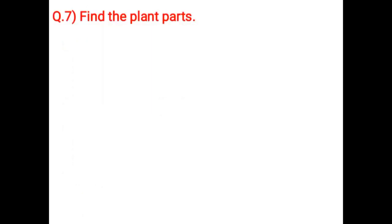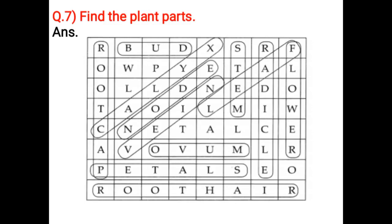Spines on leaf. Labeling activity: Root cap, Ovum, Petals, Bud, Root hair, Calyx, Node, Vein, Leaf, Stem, Radicle, Flower, Water, etc.